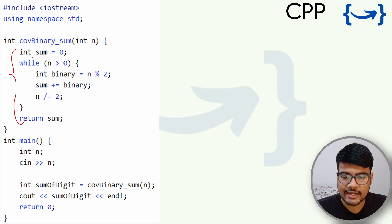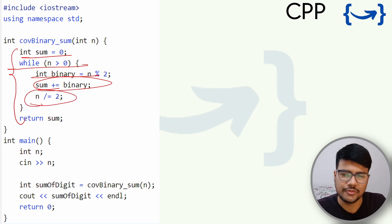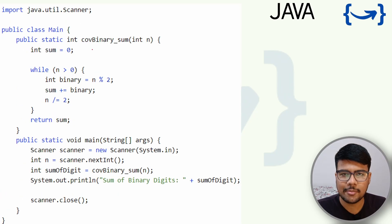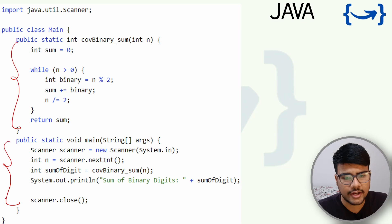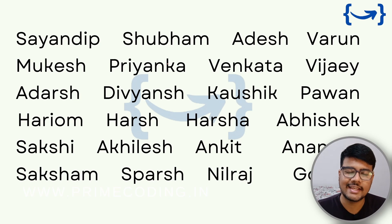The C++ program looks very similar: int sum is initialized, then in the while loop we find the binary bit, accumulate into sum, and reduce n by 2. The time and space complexity remain the same — O(log n) time and O(1) space. The Java implementation is identical in logic. You can find all three language solutions on GitHub.